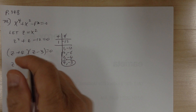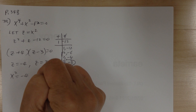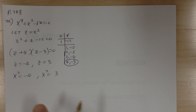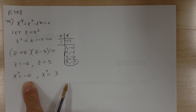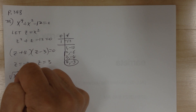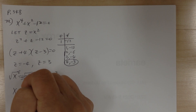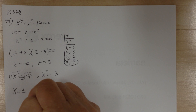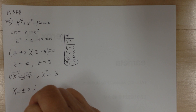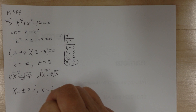Substitute back: x² = −4 and x² = 3. For x² = −4, take square roots on both sides — √(−1) = i, √4 = 2, so x = ±2i. For x² = 3, taking the square root gives x = ±√3.